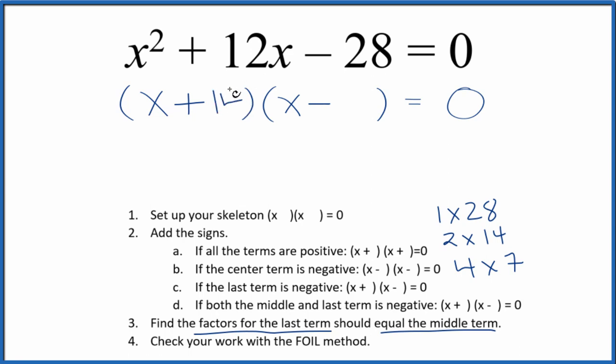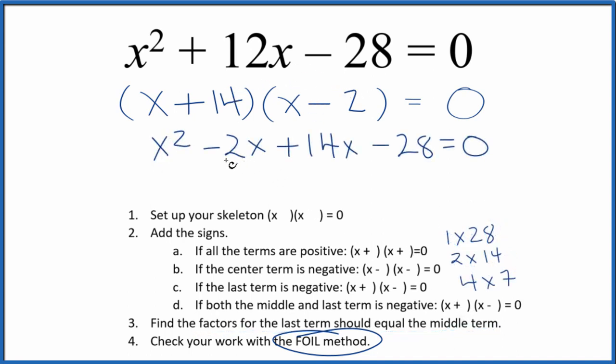Then we can check our work with the FOIL method. We multiply the first, outside, inside, and last terms, and that gives us x squared plus 14x minus 2x minus 28, and we can reduce this down to x squared plus 12x minus 28, and that is the same thing we started out with. So we've correctly factored x squared plus 12x minus 28.